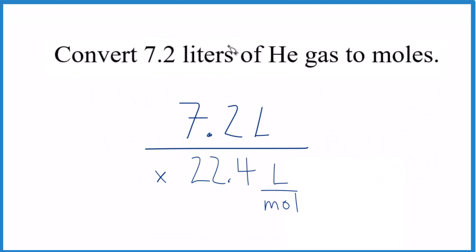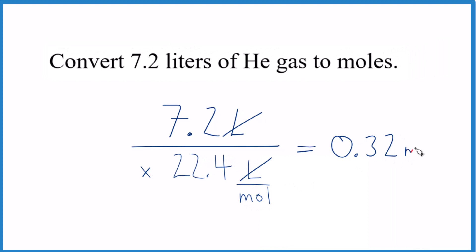So we have our 7.2 liters from the problem. We have our 22.4. Liters are on the top and the bottom. They cancel out. So when we divide 7.2 by 22.4, we get 0.32, units are moles. So 0.32 moles of helium gas.